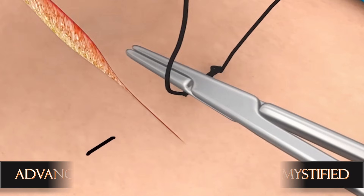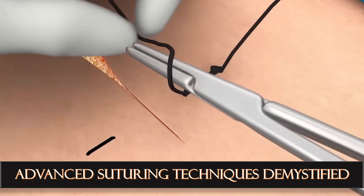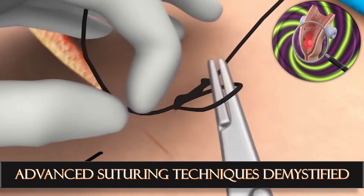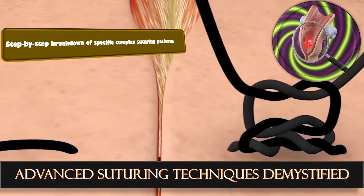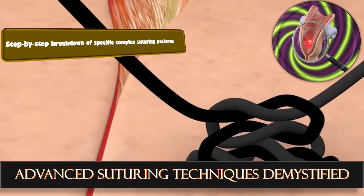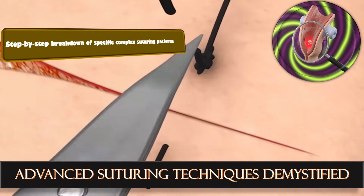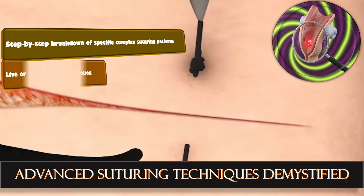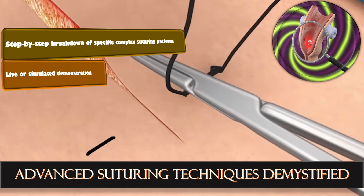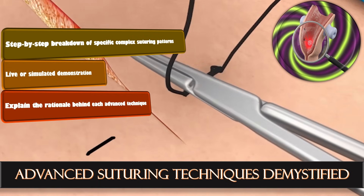Advanced suturing techniques are demystified through a step-by-step breakdown of complex suturing patterns — for example, figure-of-eight and mattress sutures for different tissue types. Live or simulated demonstrations cover instrument handling and needle placement for optimal tension and apposition, with the rationale behind each advanced technique linked to improved functional and anatomical outcomes.